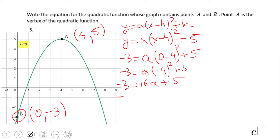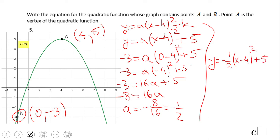Subtracting 5 on both sides gives us -8 equals 16a. Divide by 16, we get -8/16 or -1/2. Now we can write the equation: y equals -1/2(x - 4)² + 5. That is the answer for problem number 5. And the last problem in this presentation, problem number 6, you're gonna do it.